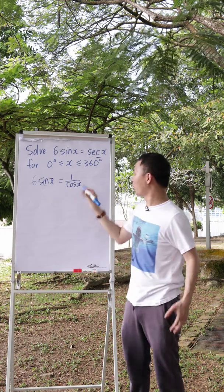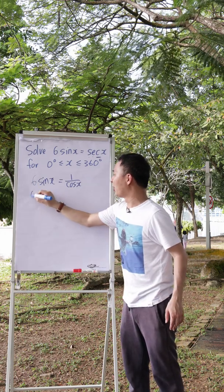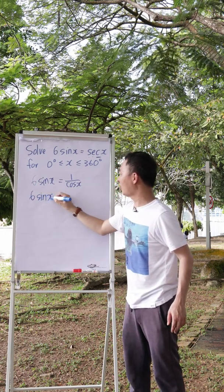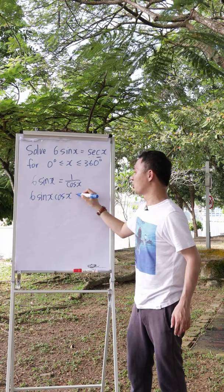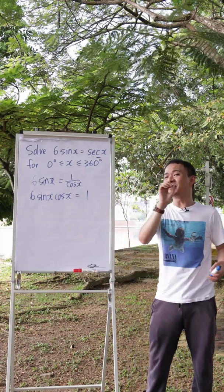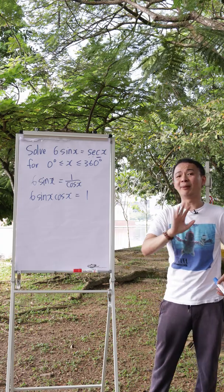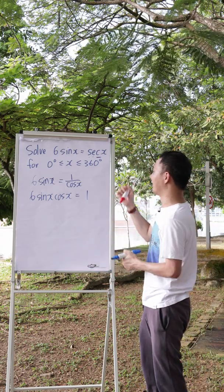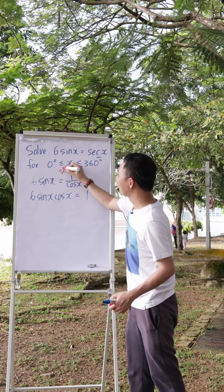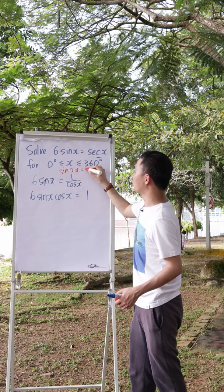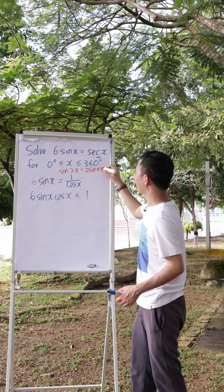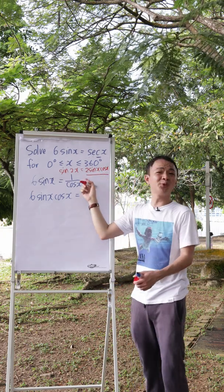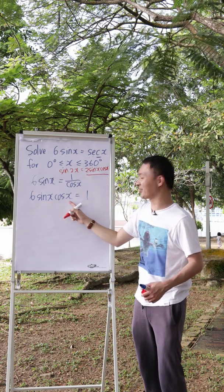And then what I will do next is I will move the cos x to the other side. I will get 6sine x cos x equals to 1. When you see the equation like this, it's a little bit tricky if you do not know what is a double angle for sine. Because we know a formula for double angle for sine, isn't it? We know basically sine 2x equals to 2sine x cos x.